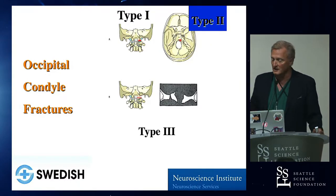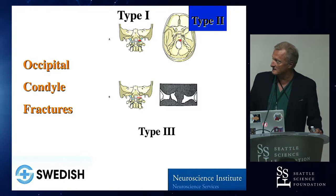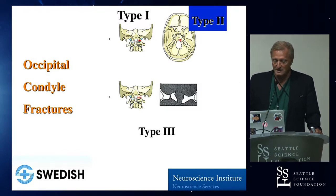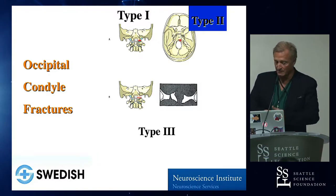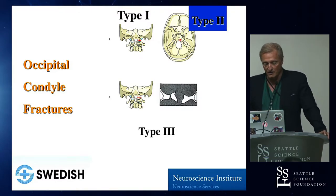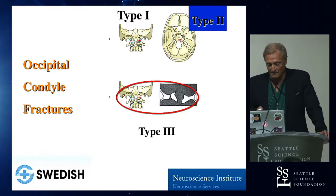Before the advent of CT, most occipital condyle fractures were overlooked or not even studied. The Germans had a very complicated study with seven subcategories. But this is what we were taught — my faculty mentor, Dr. Anderson, came up with this. Type 1: simple impaction, stable. Type 2: a problem fracture with avulsion. Type 3: a shear fracture through the skull base.